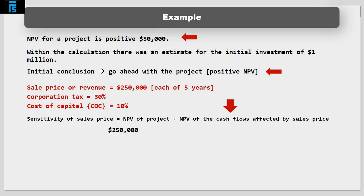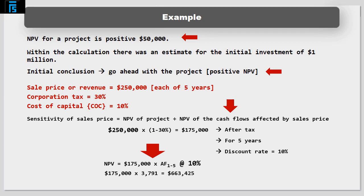The present value of after-tax revenue is therefore $175,000 times the 5-year annuity factor at 10% which equals $175,000 times 3.791 equals $663,425.